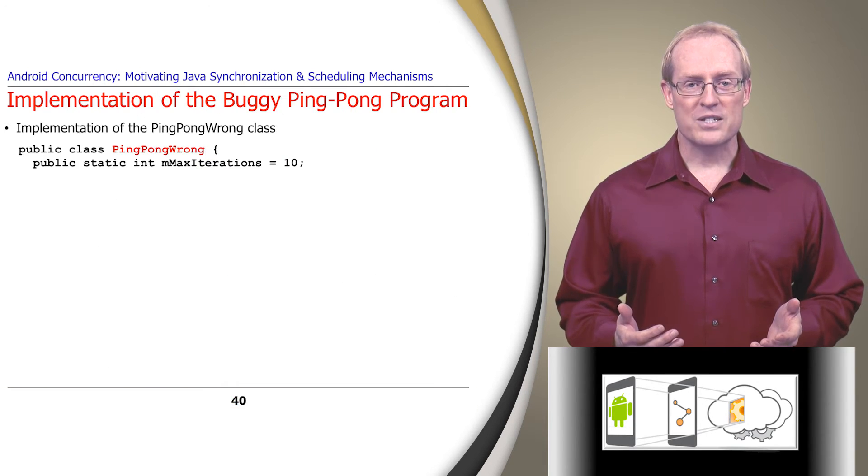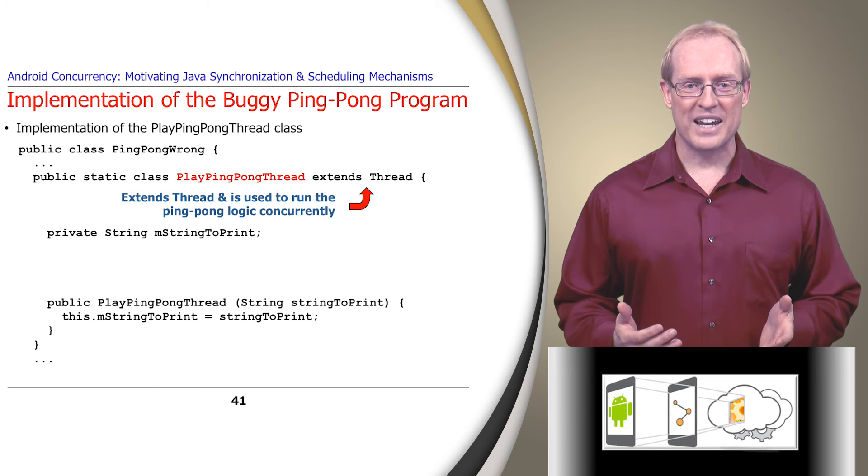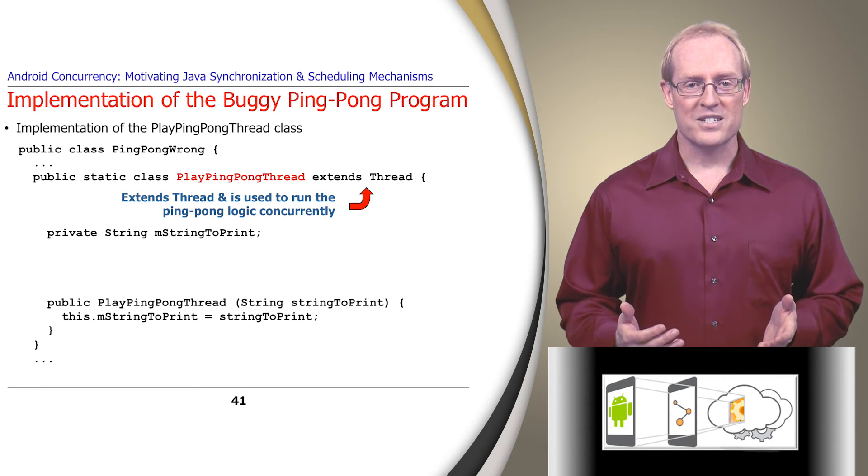The entire example is implemented within the ping-pong-wrong class, which contains a static data member that stores the number of times each thread prints ping and pong. It also contains a static nested class called play ping-pong thread that extends the Java thread class and runs the ping-pong logic concurrently.